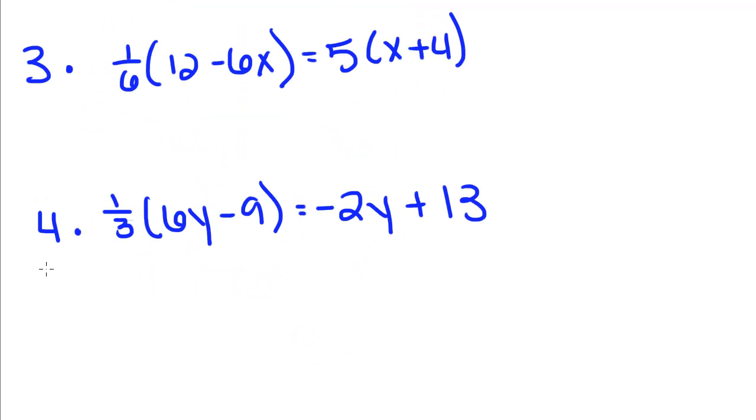So now we have fractions, and you can do this a couple different ways, but I think the easiest way is to multiply your fraction in and reduce. So for this, we would take 1/6 times 12, which is 12 divided by 6, minus 6 times 1/6, which is divided by 6, is equal to 5x plus 20.